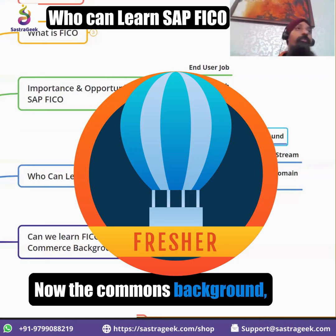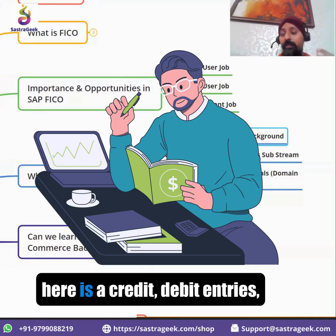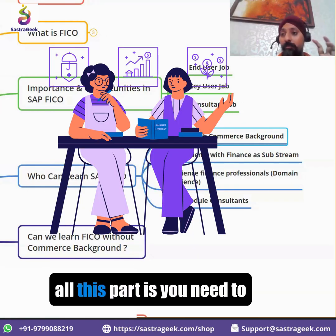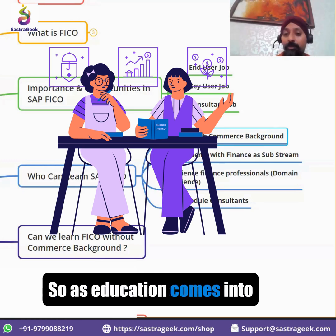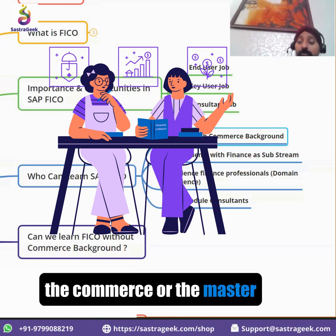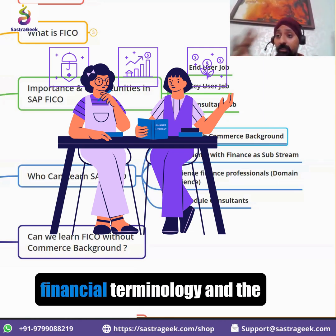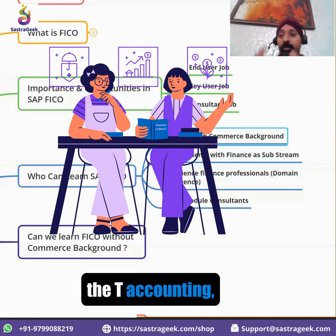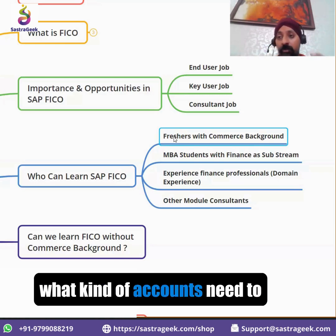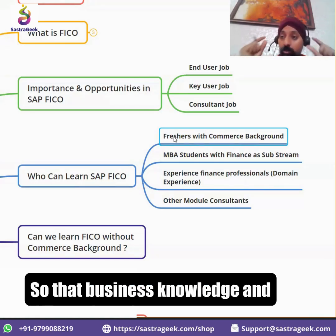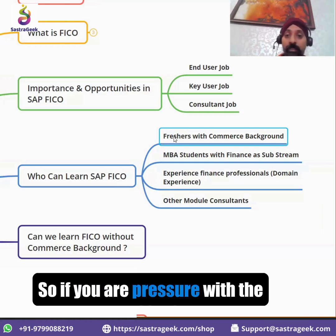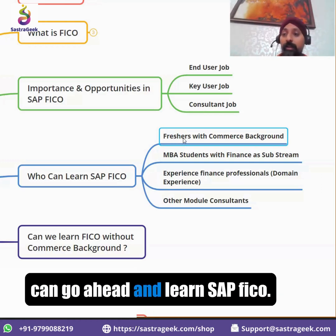Freshers with the commerce background — we are highlighting it here because what we will be talking about is credit and debit entries, assets, depreciation. You need to know the basics of it. MBA finance students or commerce background students doing bachelors or masters in commerce are already aware of all this financial terminology — T accounting, general ledger accounting, when credits and debits need to happen, what kind of accounts to hit in what business scenarios. That business knowledge, terminology, and mindset is required to learn SAP. So if you are a fresher with the commerce background, you can go ahead and learn SAP FICO.